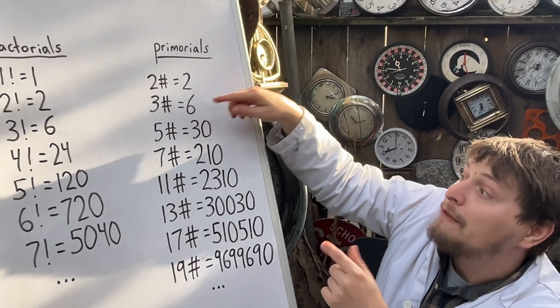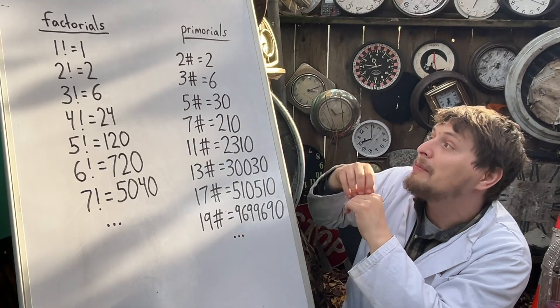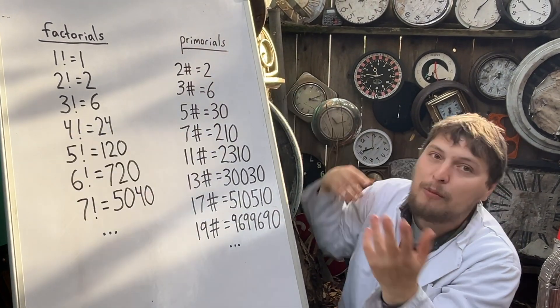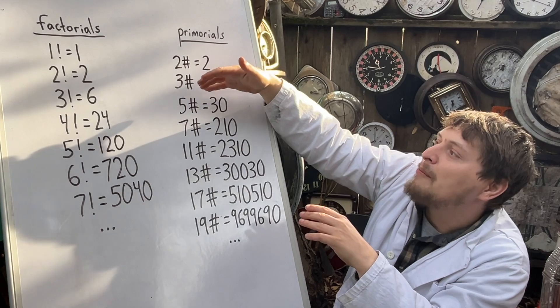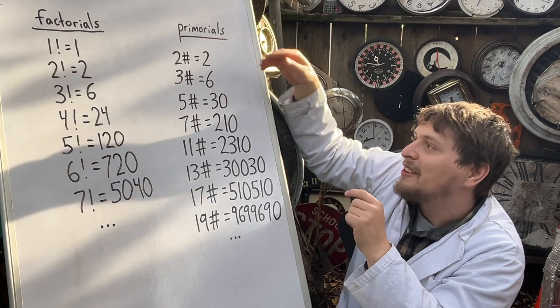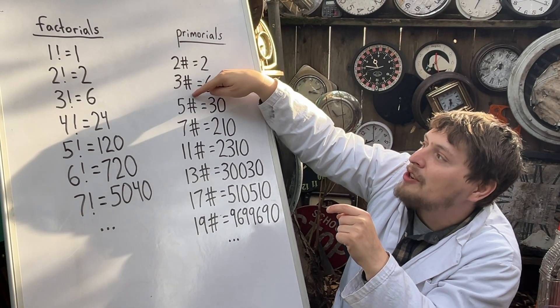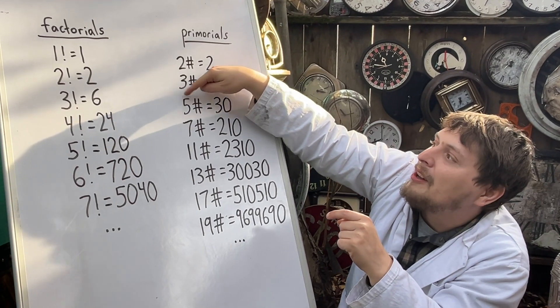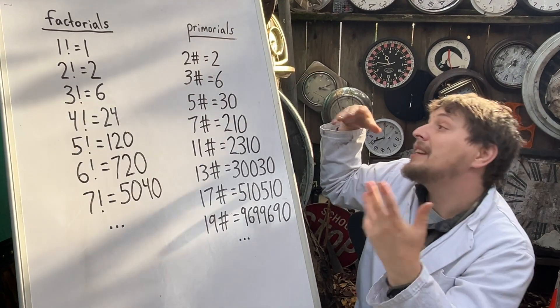Typically, if you saw something like 4 primorial, you would assume it's going to be equal to 3 primorial, or a primorial of a composite would end up being the same result as the primorial of the latest prime beneath it.